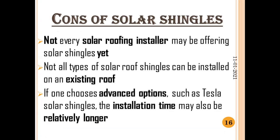Now let's discuss some of the cons of solar shingles. Not every solar roofing installer may be offering solar shingles yet, because they are still catching up in acceptance and popularity. Not all types of solar roof shingles can be installed on an existing roof, unlike traditional solar panels which can be installed on almost any type of roof. If you choose advanced options such as Tesla solar shingles, you will most likely need to build a new roof, and the installation time may also be relatively longer.